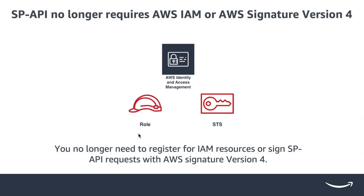Starting October 2nd, there's been a significant change to SP API. We have simplified things. The use of AWS Identity and Access Management, or AWS Signature version 4, will no longer be a requirement.